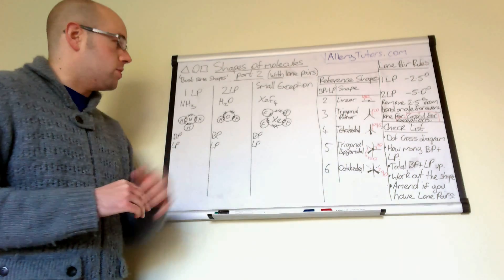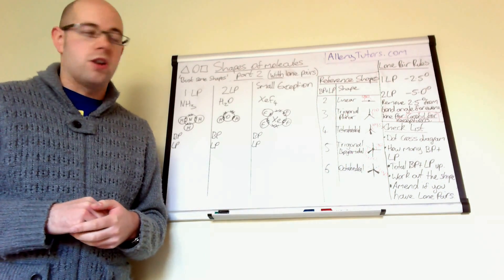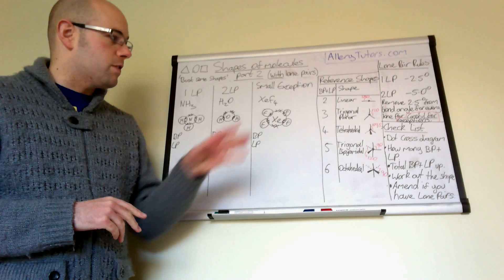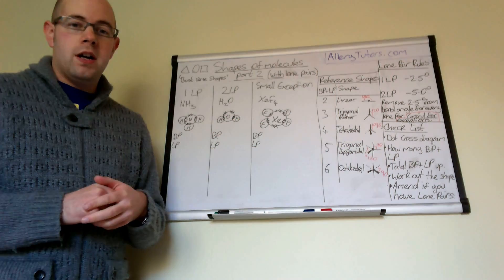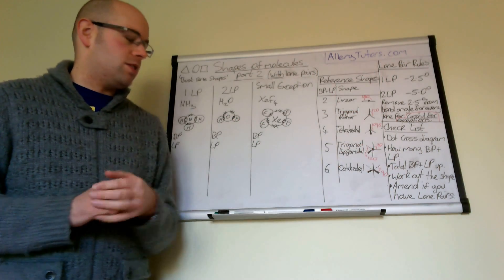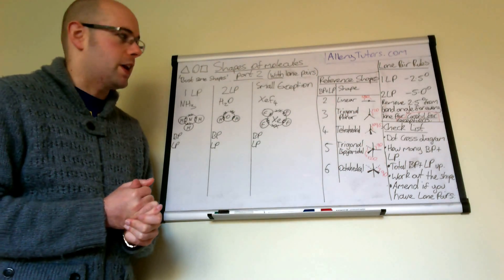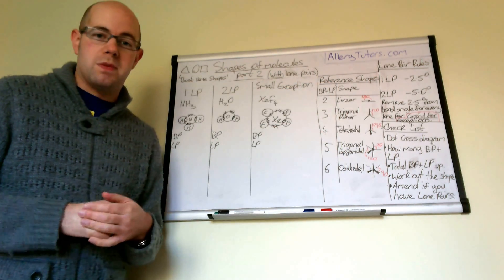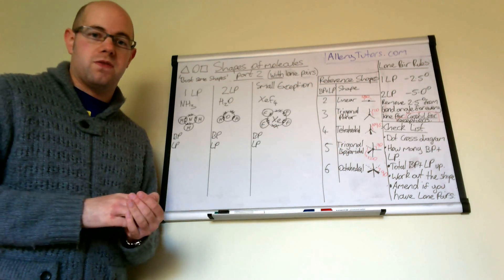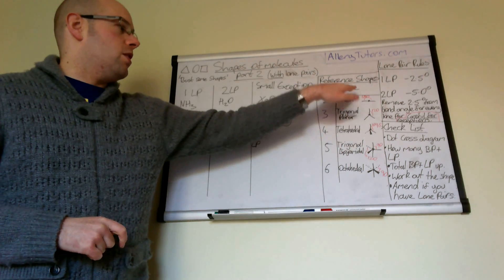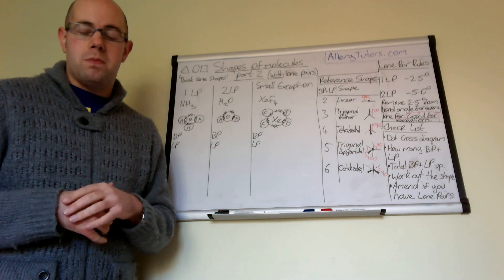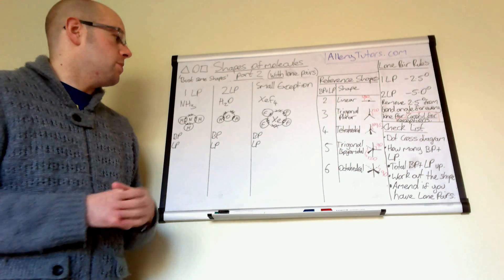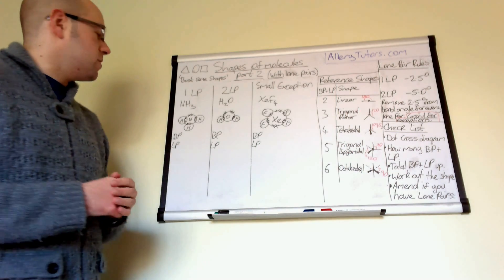I'm going to go through three examples to show you. There is an exception one which I'll look at at the end. We're going to follow our rules — our checklist — which was seen in the first video on bond shape. I've also written down our reference shapes again from the first video. These are shapes that have no lone pairs in them, but we need to use these to work out the shapes of the molecules with lone pairs.